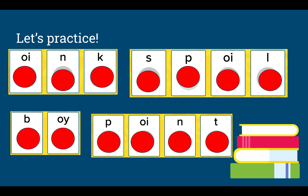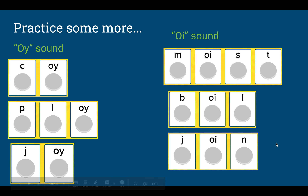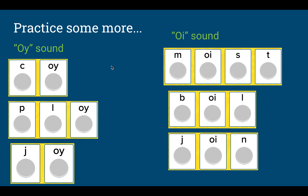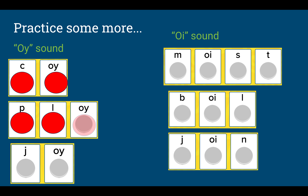Let's do a few more. We're going to try just the O-Y sound. K-oi, coy. P-O-L-oi, ploy. J-O-Y, joy.